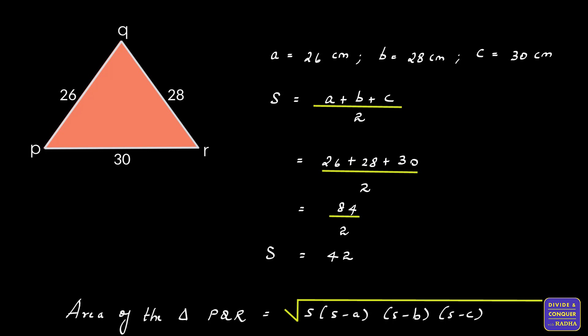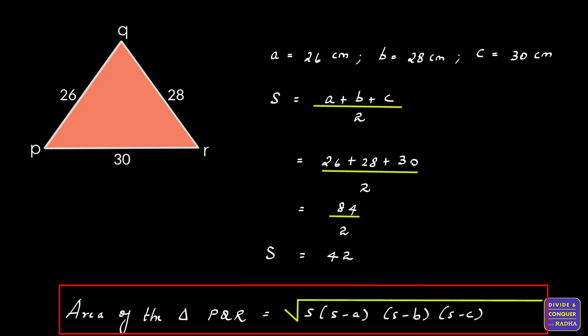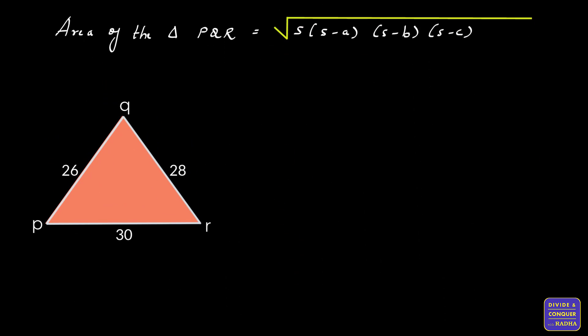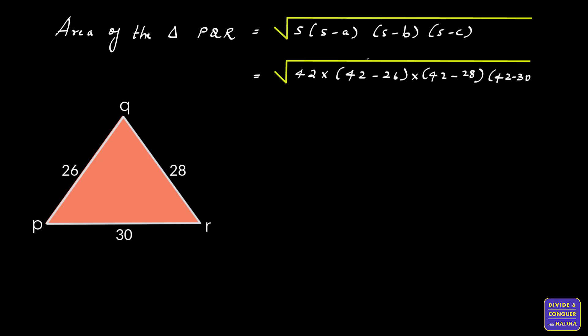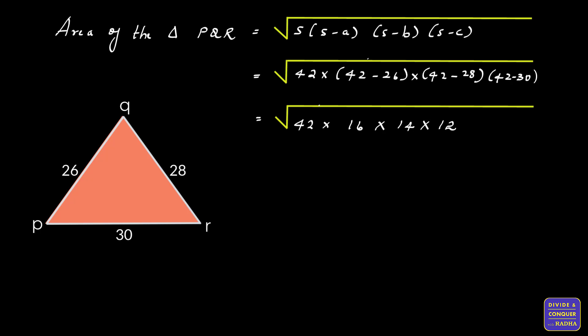Now let's calculate the area of triangle PQR using Heron's formula: Area = √(s × (s − a) × (s − b) × (s − c)), where s is the semi-perimeter and a, b, c are the corresponding sides. Substituting: √(42 × (42 − 26) × (42 − 28) × (42 − 30)) = √(42 × 16 × 14 × 12).